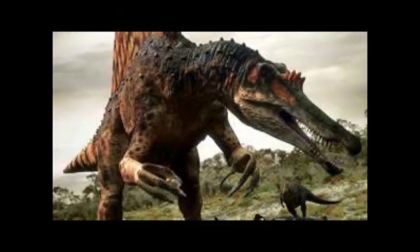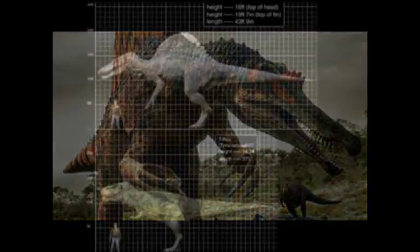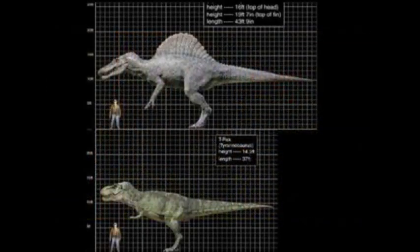The largest known predator is Spinosaurus, bigger than a T-Rex, weighing up to 8 tons. If you look at the legs of these predators, one can easily see these dinosaurs were extremely fast and powerful, and they used their speed to hunt down prey.